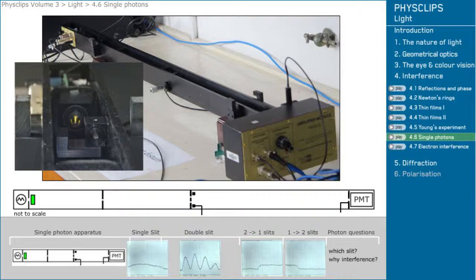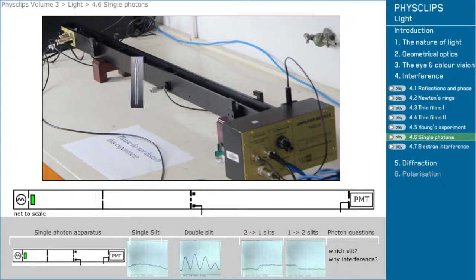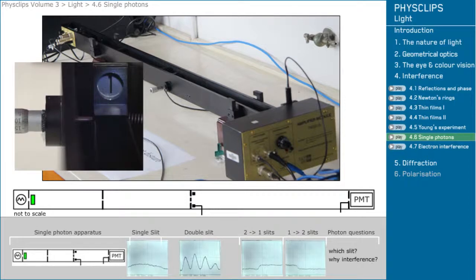Here we have a dim lamp and a filter with a very narrow bandwidth. Then there's a single slit that emits very little light, then two slits for a Young's experiment. We can close one of them with a baffle.